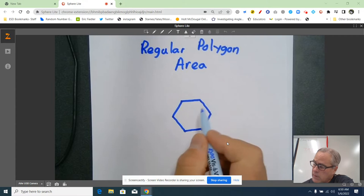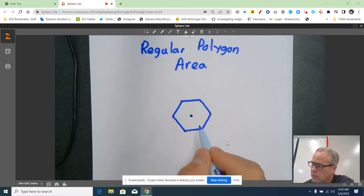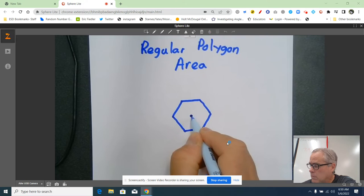First of all, with a regular polygon to find the area, you need to know what a few things are called. The distance from the center—and when I say center, imagine a circle going through these vertices and the center of that circle—the distance from the center perpendicular to the side, that is called an apothem.